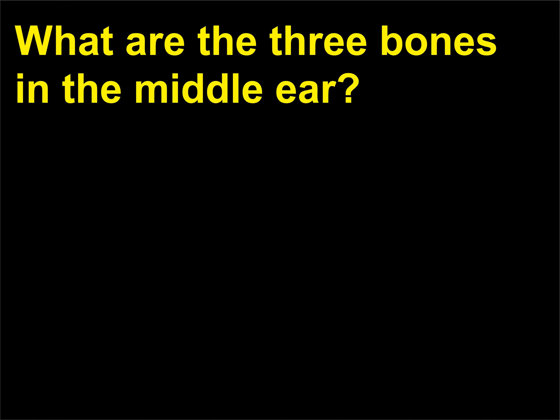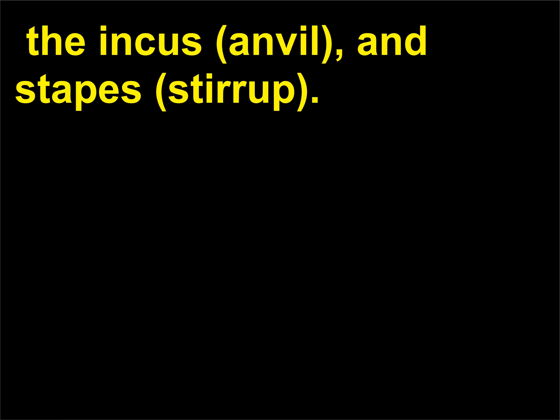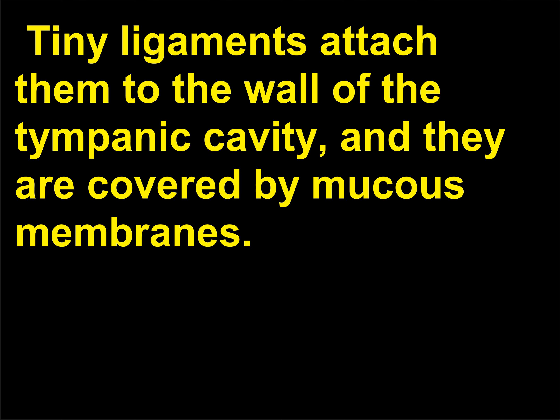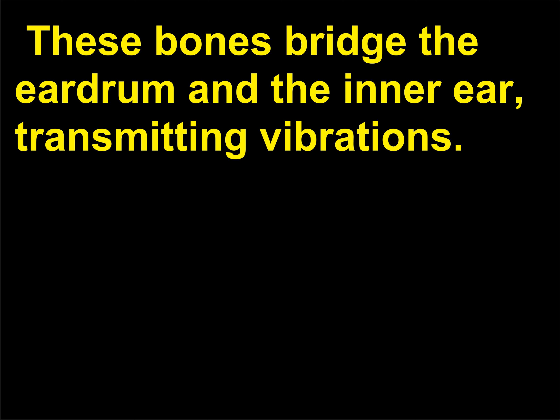What are the three bones in the middle ear? The three bones, or auditory ossicles, in the middle ear are the malleus (hammer), the incus (anvil), and the stapes (stirrup). Tiny ligaments attach them to the wall of the tympanic cavity, and they are covered by mucous membranes. A special muscle, the stapedius, is attached to the stapes and can dampen its vibrations. These bones bridge the eardrum and the inner ear, transmitting vibrations.